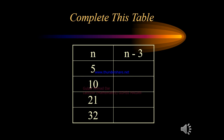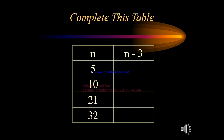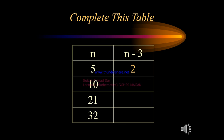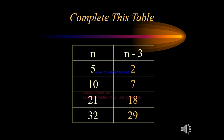Now let's complete a table. On the left column we have n, and on the right column we have n minus 3. If we replace n by 5, the result on the right is 5 minus 3, which equals 2. If n equals 10, the result is 10 minus 3, which is 7. For n equals 21, the result is 21 minus 3, which is 18. And 32 minus 3 becomes 29.